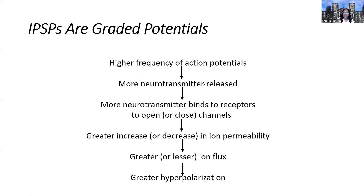To recap what we mentioned before this point, we talked about graded potentials, and here we're drilling down at the different types of graded potentials. So we described EPSPs, and we said that those were excitatory membrane potential changes that were brought about when either a sodium or a calcium channel opens up, which allows positive charge to enter the neuron, and that becomes an excitatory or positive change.